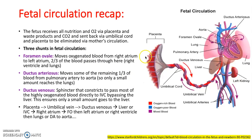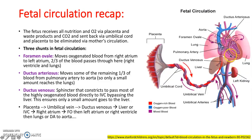So the blood comes from the placenta into the umbilical vein, through the ductus venosus into the liver or the inferior vena cava, and then from there it goes into the right atrium through the foramen ovale or into the right ventricle. If it goes through the foramen ovale, it goes from the left atria into the left ventricle, up through the aorta and to the rest of the body.